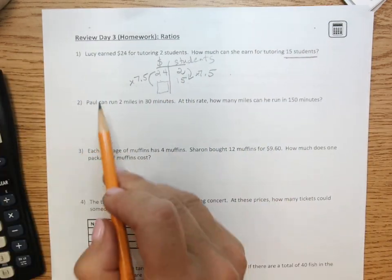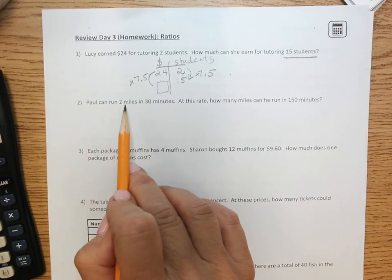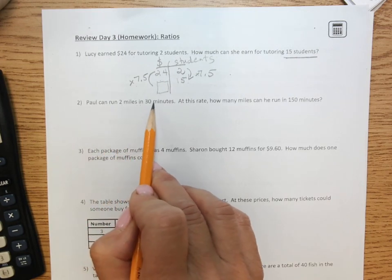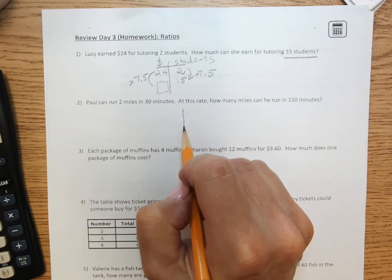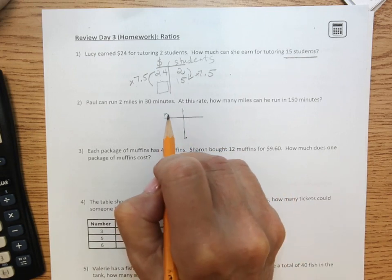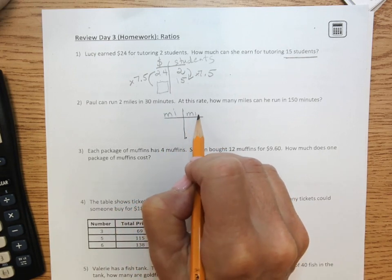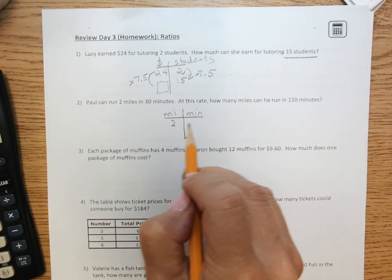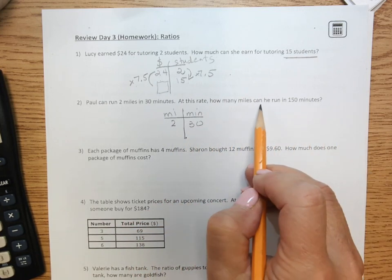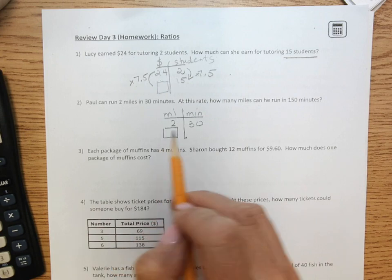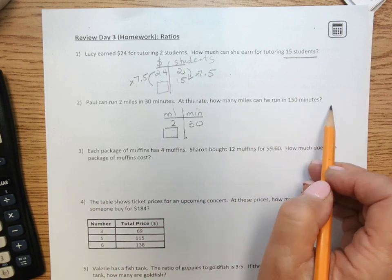Question 2. Paul can run 2 miles in 30 minutes. T-chart. Miles and minutes. 2 and 30. How many miles can he run in 150 minutes?